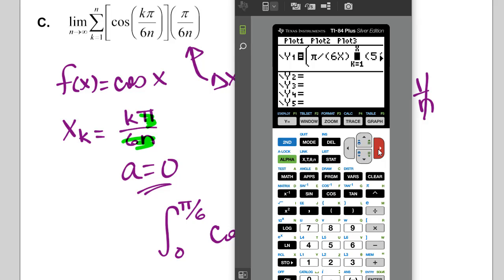And now I'm ready to do my sum from k equals 1 to x of cosine of k pi over 6n. So alpha k, second, we can get the pi key, divided by parenthesis 6x, close parenthesis. Okay. All right. So that should be our Riemann sum. Okay.